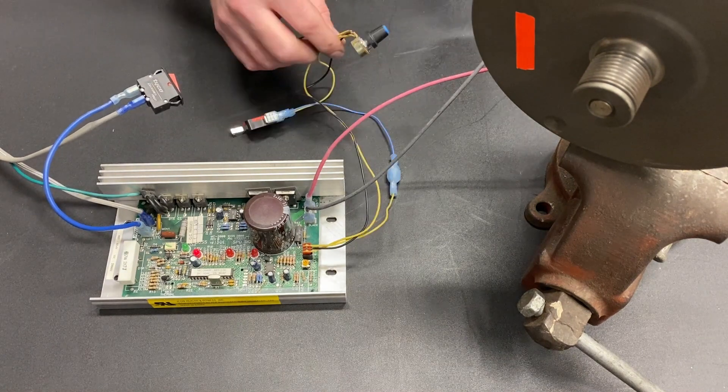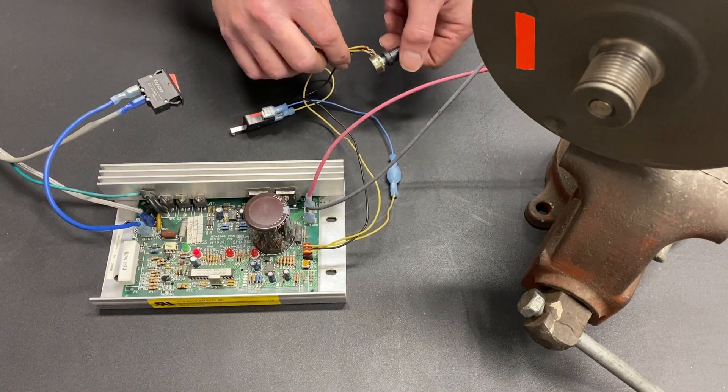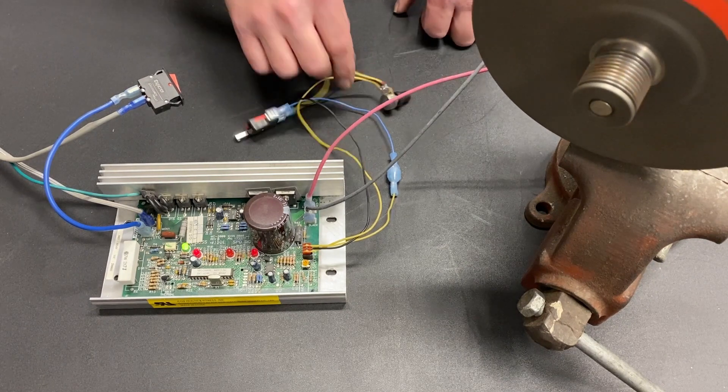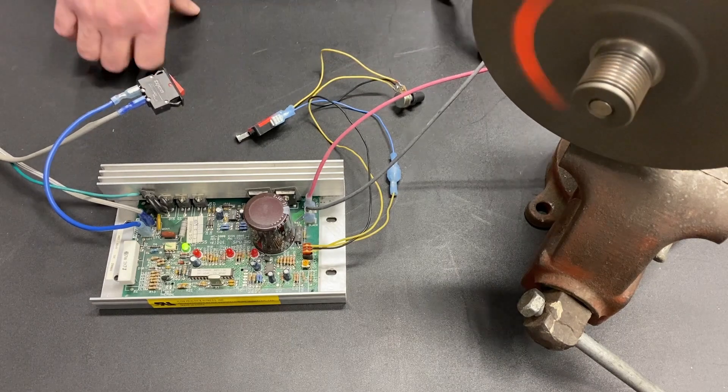So we turn it on. This is at its slowest setting. So nothing happens. We slowly begin to turn the potentiometer. Motor comes on. Go ahead and shut it off.